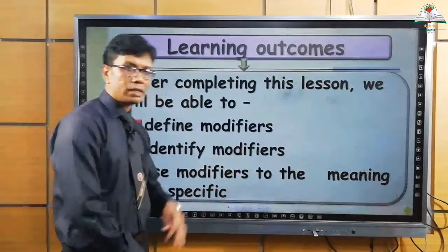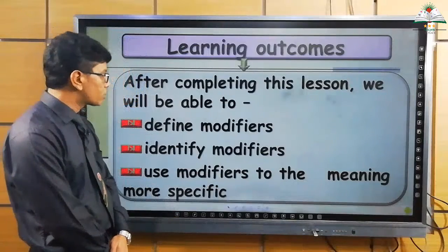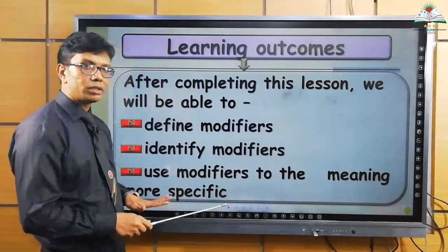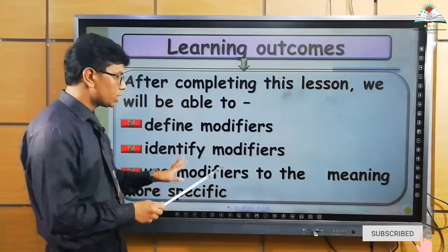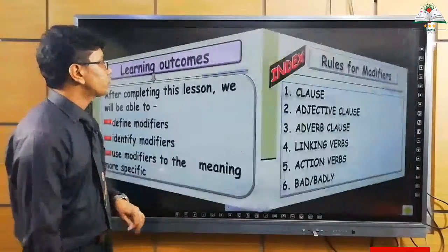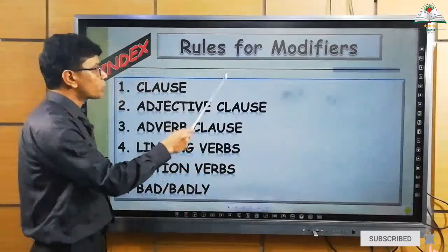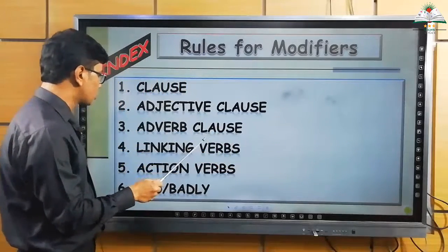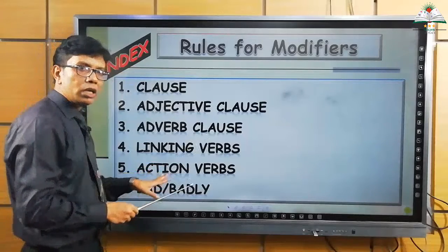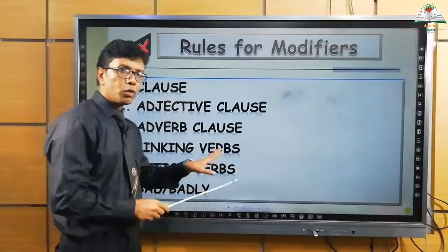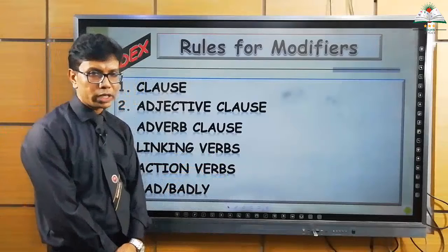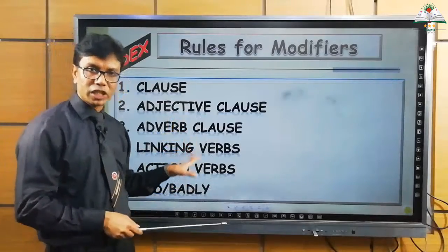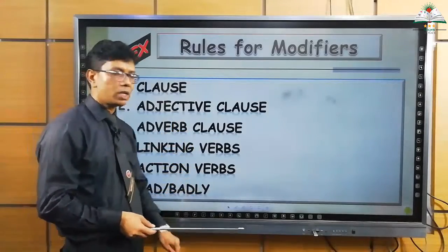This topic has certain purposes. After completing this lesson, you will be able to define what a modifier is, identify modifiers, and use modifiers in different situations. The rules for modifiers include: clause, adjective clause, adverb clause, linking verbs, action verbs, and bad or badly. These are the rules you will need when answering questions on modifiers.